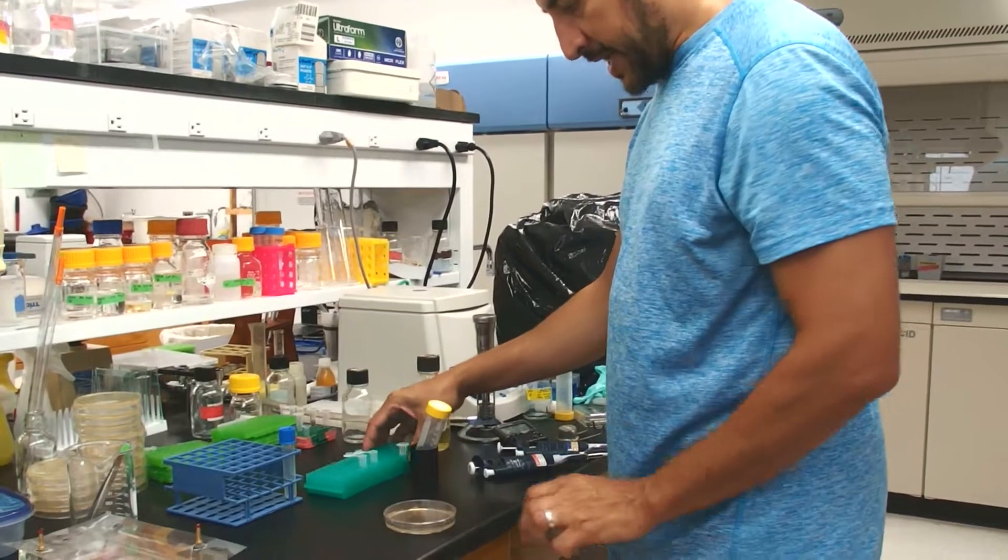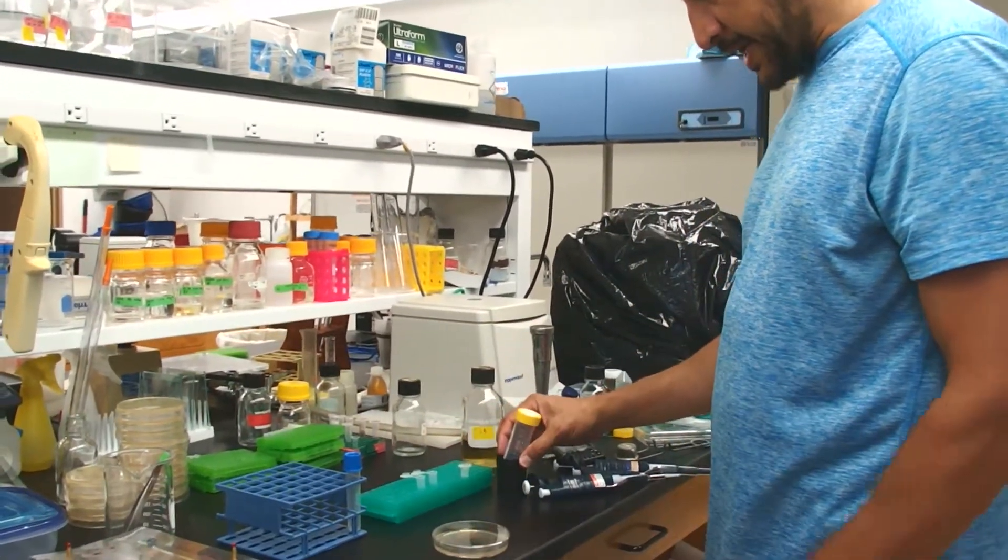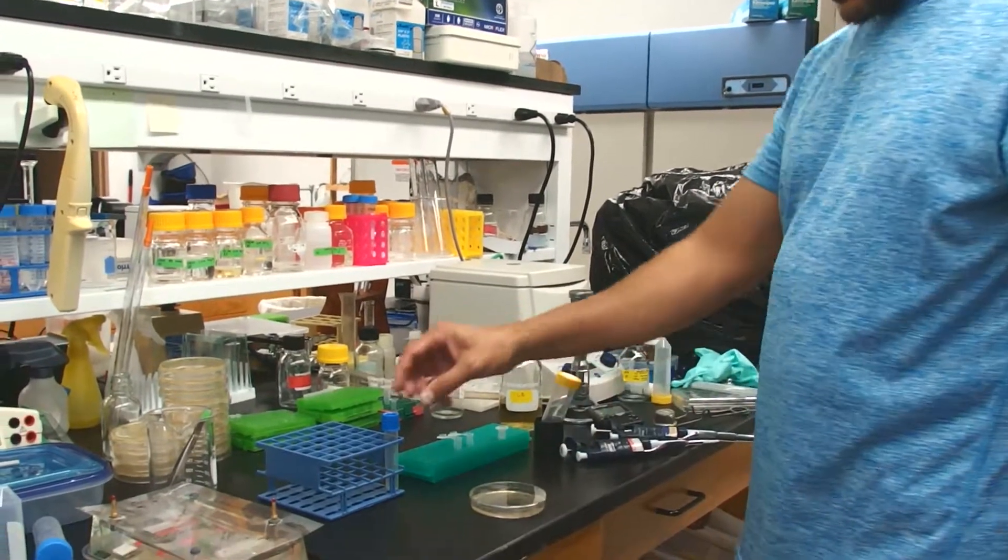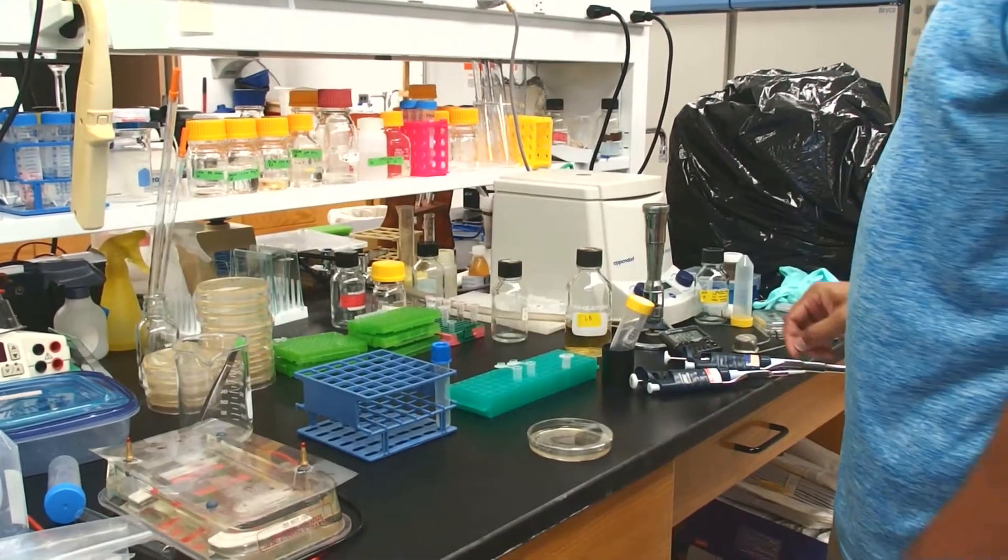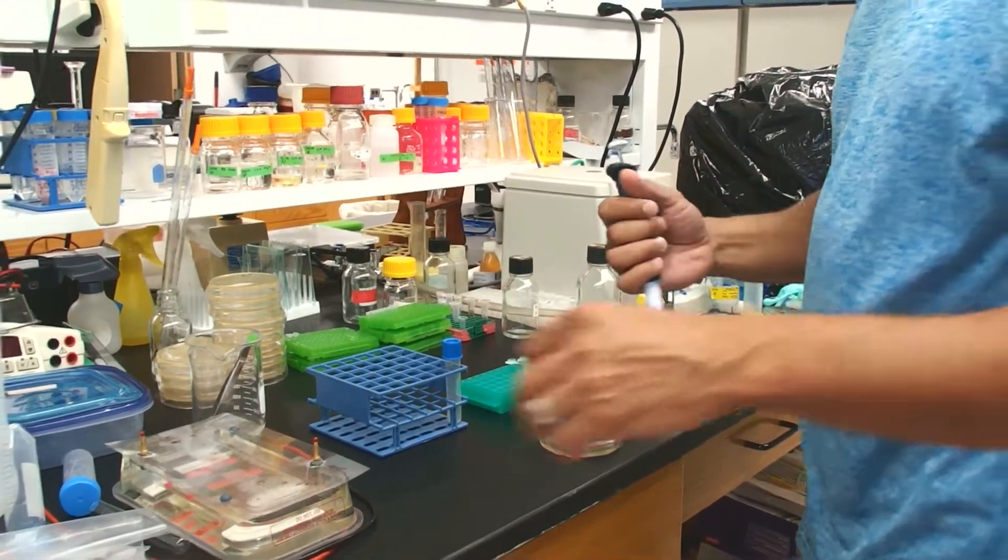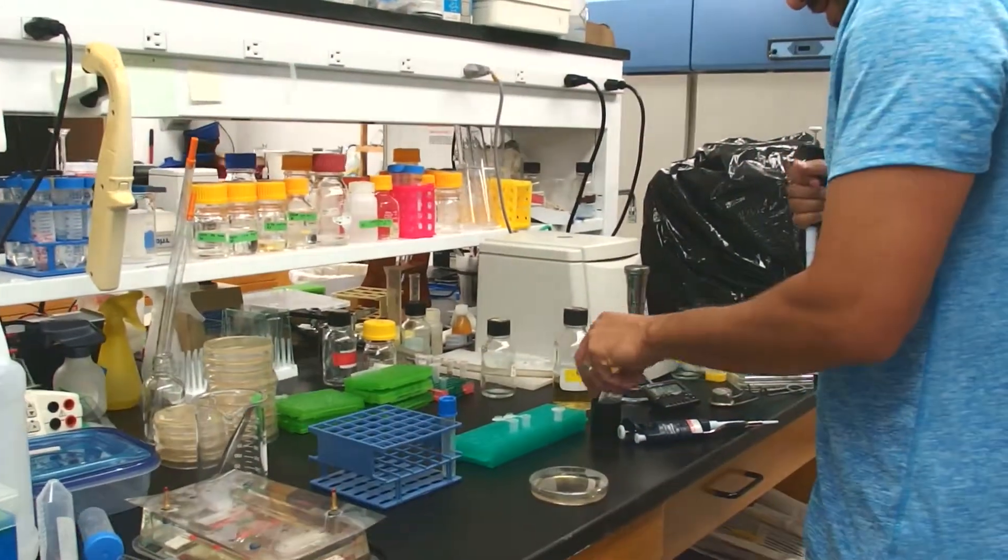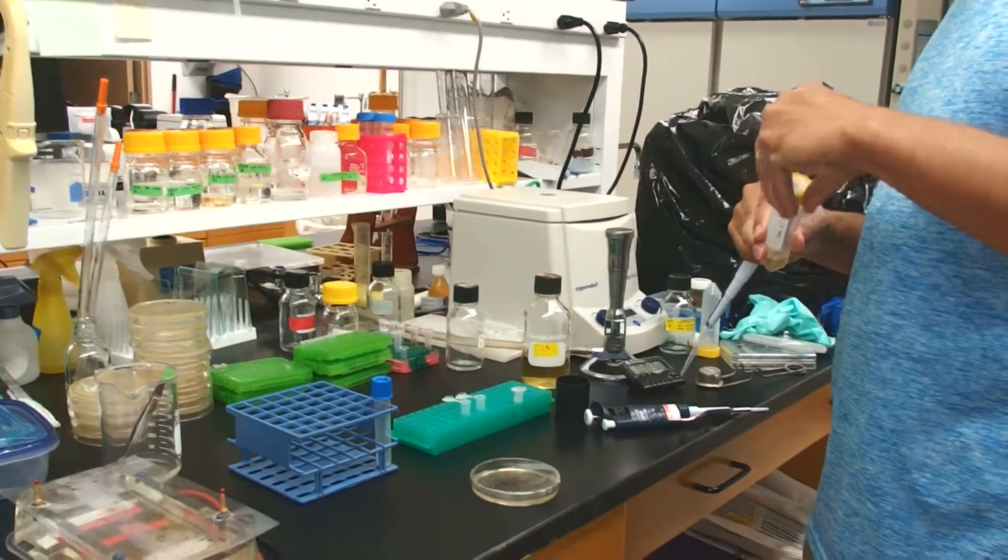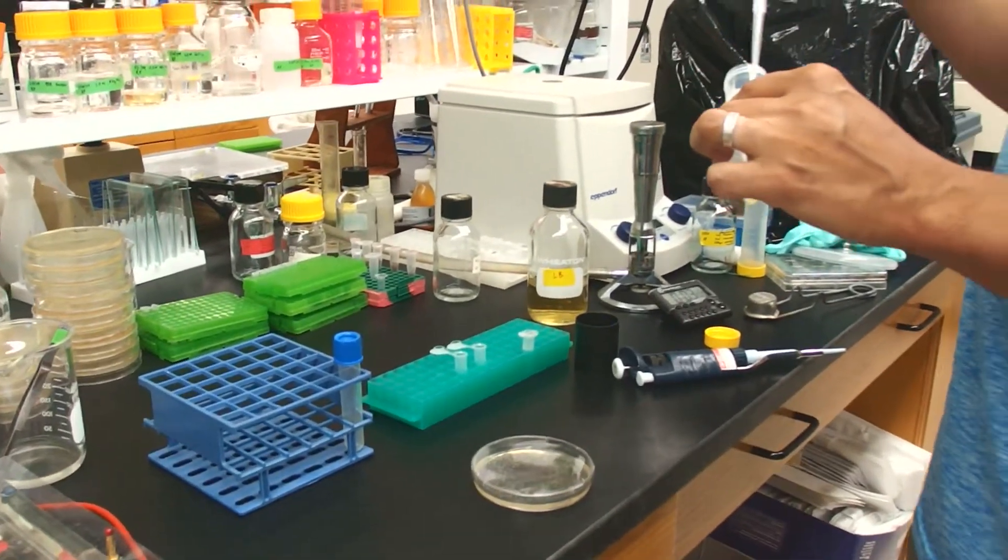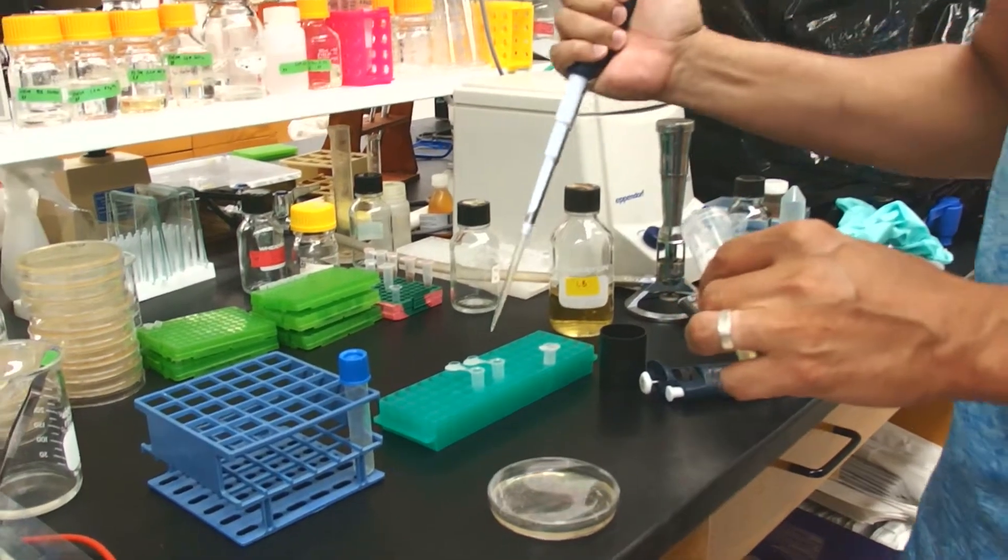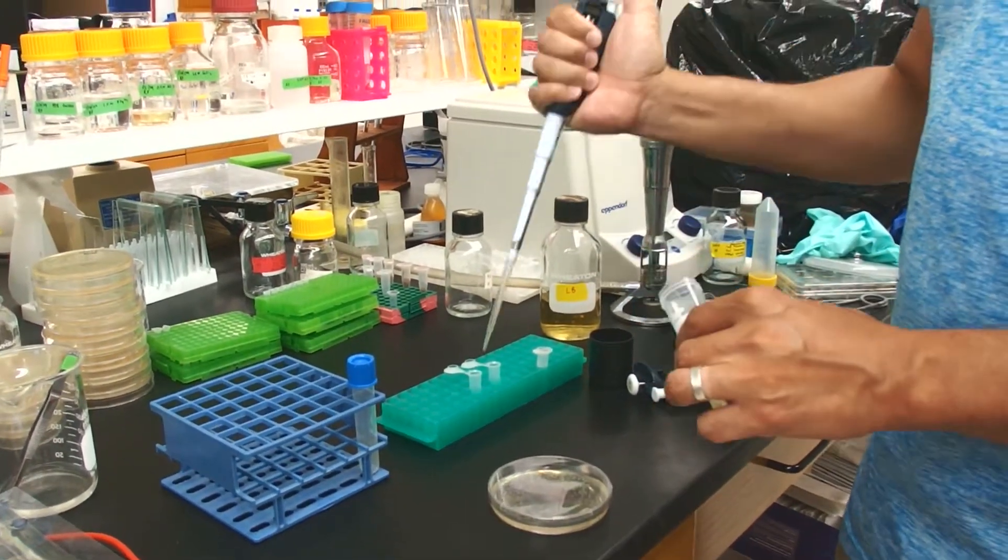I'm going to inoculate two different growth vessels. I'm going to inoculate 2 milliliter tubes, and I'm going to inoculate a standard 14 to 15 milliliter culture tube. The 2 milliliter tubes can hold a maximum of 1.7 milliliters. I'm going to pipette 1.7 milliliters into each of these tubes.